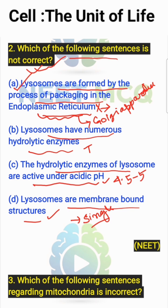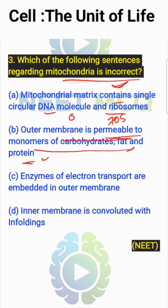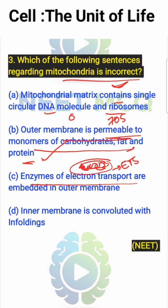Which of the following sentences regarding mitochondria is incorrect? The mitochondrial matrix contains a single circular DNA molecule and ribosomes — that is true; they have their own DNA and 70S ribosomes. The outer membrane is permeable to monomers of carbohydrates, fat, and protein — this is also true. Mitochondria is a double membrane structure, and the inner membrane has foldings named cristae.